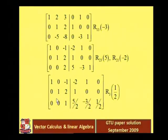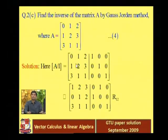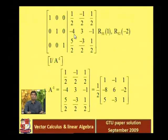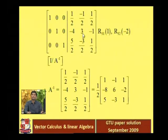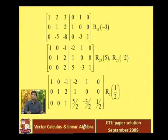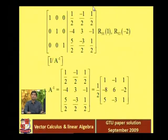The whole left matrix becomes the identity matrix. For the right side: multiply third row by minus 2 and add to second row — 5/2 × (minus 2) = minus 5, plus 1 = minus 4; minus 3/2 × (minus 2) = 3, plus 0 = 3; 1/2 × (minus 2) = minus 1, plus 0 = minus 1. So the second row becomes minus 4, 3, minus 1.